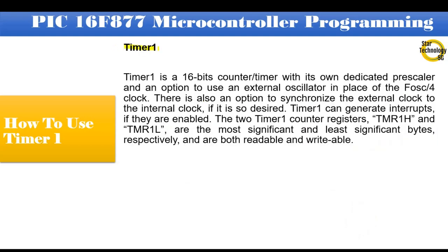Timer 1 is a 16-bit counter timer with its own dedicated prescaler and an option to use an external oscillator in place of the Fosc/4 clock. There is also an option to synchronize the external clock to the internal clock, if it is so desired. Timer 1 can generate interrupts if they are enabled. The two Timer 1 counter registers, TMR1H and TMR1L, are the most significant and least significant bytes, respectively, and are both readable and writable.